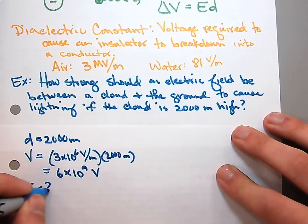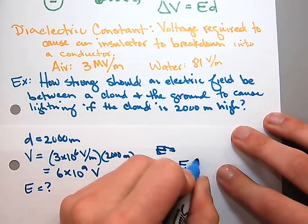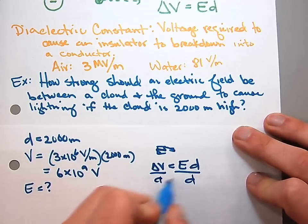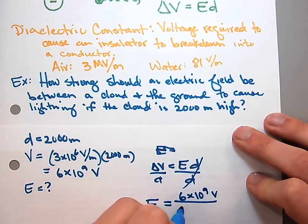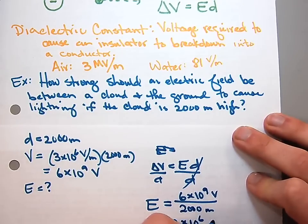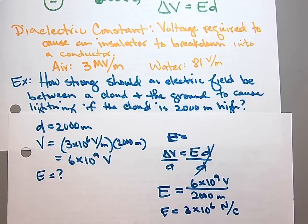We're looking for the strength of the electric field. The voltage difference equals the electric field times the distance between the plates, so if I want the electric field, I divide by the distance. The electric field comes out to 3×10⁶ newtons per coulomb — the electric field required through any distance of air to cause breakdown is 3×10⁶ N/C. So when I'm zapping between the orb and the Van de Graaff generator, that's the same electric field strength as a lightning strike, just nowhere near as much voltage because the distance is much smaller.